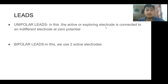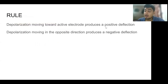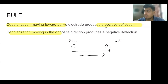Leads can also be divided as unipolar or bipolar. Unipolar leads have only one active electrode and the indifferent electrode is placed at zero potential, while in bipolar leads we have two active electrodes — one positive and one negative. The rule is: depolarization moving towards the active electrode produces a positive deflection, while depolarization moving in the opposite direction produces a negative deflection. For example, lead 1 has a negative electrode in the right upper limb and a positive electrode in the left upper limb.